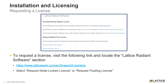Once Radiant has been installed, a valid license will need to be provided before the software can be used. If users do not have a valid license, they will need to request a node-locked or floating license from Lattice's license request page. To request a license, visit the following link and scroll down to the Lattice Radiant Software section, then select the link for the type of license you want to request.